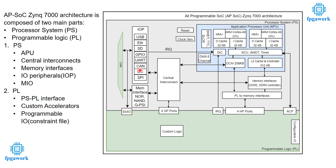One such interface is EMIO (Extended Multiplexed IO). Via this interface, you can take any peripheral to the PL part and make communication between PS and PL for different IO peripherals. For example, if an application needs to communicate with PL using a UART channel, you can easily do this using EMIO. Similarly, USB, I2C, SPI, and other peripherals can be routed through EMIO. There are also four general ports in Zynq 7000.